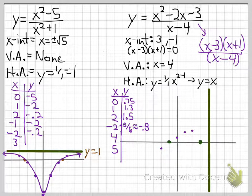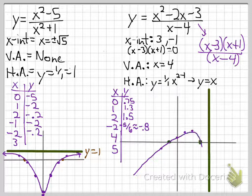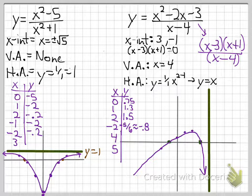Plotting these points, the graph looks like it comes up, hits our x-intercept points, and then heads down along the asymptote at x equals 4.